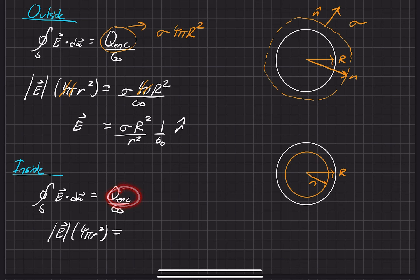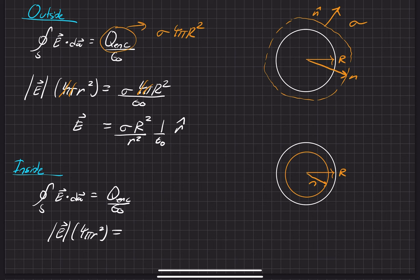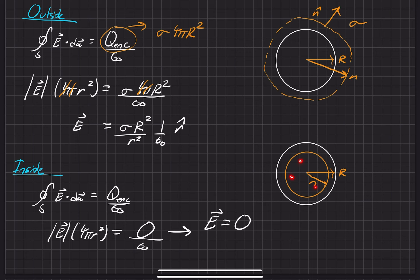Now look at the charge enclosed. Since our Gaussian surface is on the inside of our sphere, there's no charge actually there. So the charge that's enclosed is equal to zero. Then if we go ahead and solve for the electric field, it's just going to be equal to zero — which is totally in line with what we had originally found from problem 2.7. The electric field within a symmetric shell that has an electric charge density is always going to be zero on the inside.